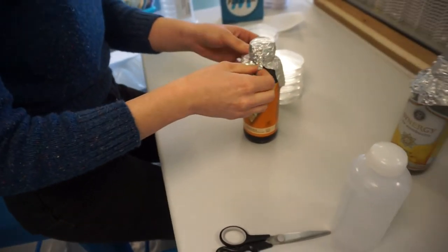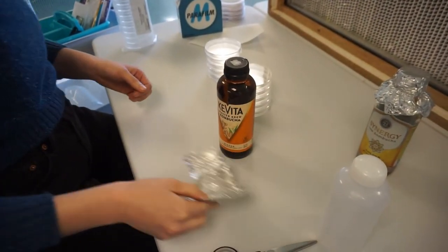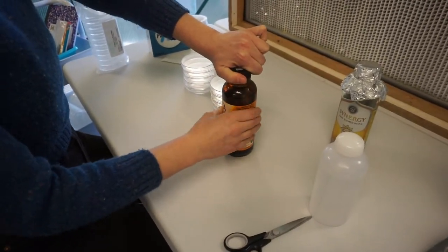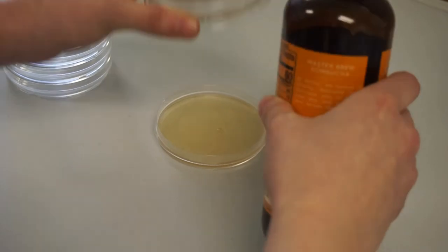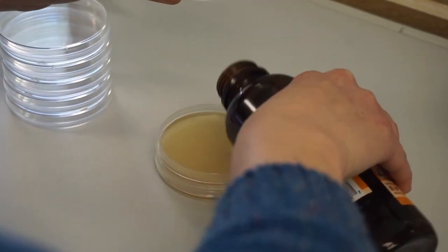In front of the flow hood, remove the tin foil and cap from the glass agar bottle. Moving swiftly but carefully, start pouring your plates. Pour from the bottom of the stack to the top, keeping each plate open for as little time as possible.